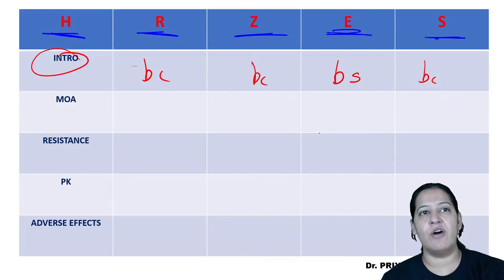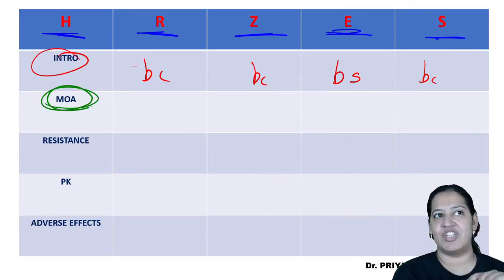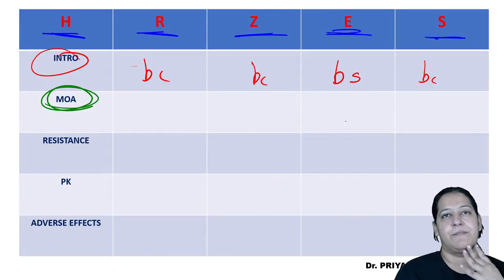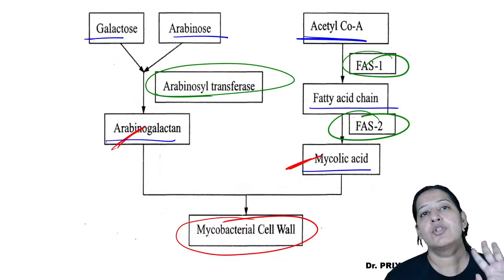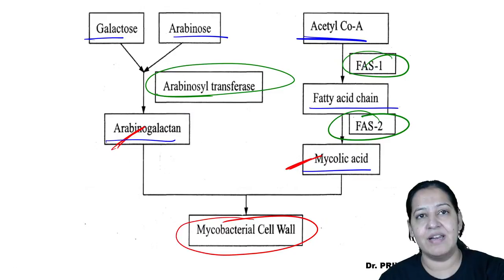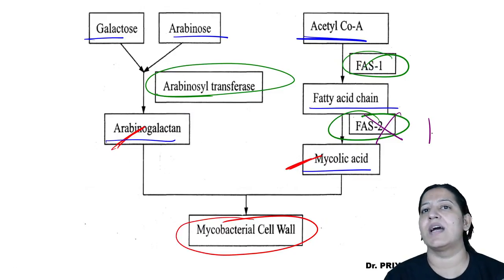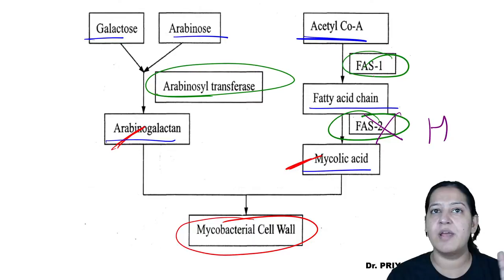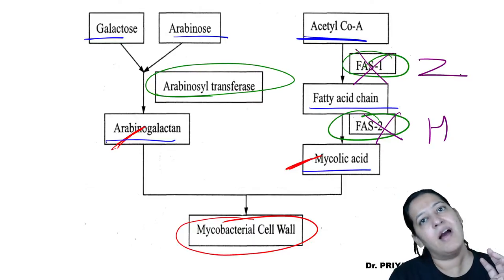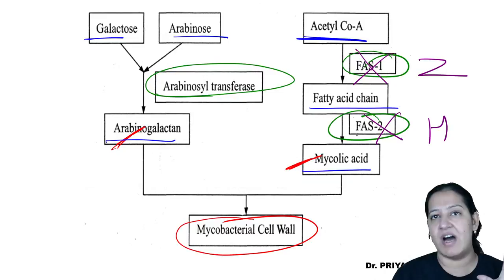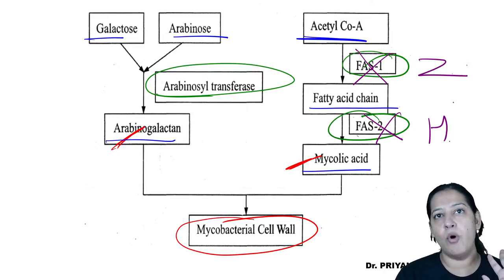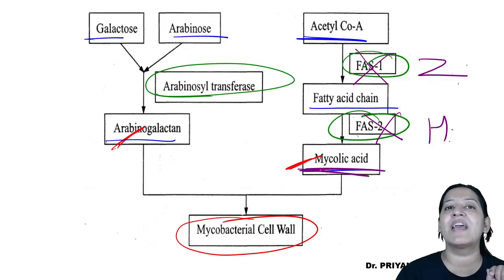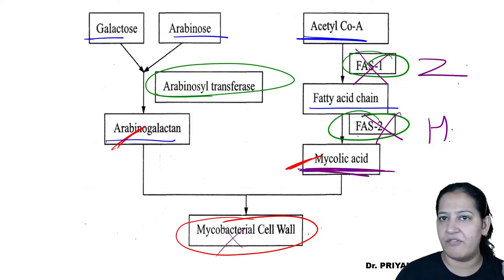Out of the five first-line drugs, three inhibit bacterial cell wall synthesis. Isoniazid inhibits FAS2; pyrazinamide inhibits FAS1 — so both inhibit mycolic acid synthesis. Ethambutol inhibits arabinotransferase, preventing arabinogalactan formation. These three drugs — isoniazid, pyrazinamide, and ethambutol — all inhibit mycobacterial cell wall synthesis.